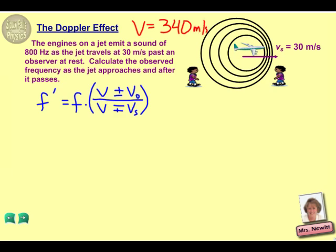VO, in this case, is the velocity of the observer. And since our observer is at rest, that's going to be zero in both cases. V sub S is going to be the velocity of the plane, and so that would be then 30 meters per second.